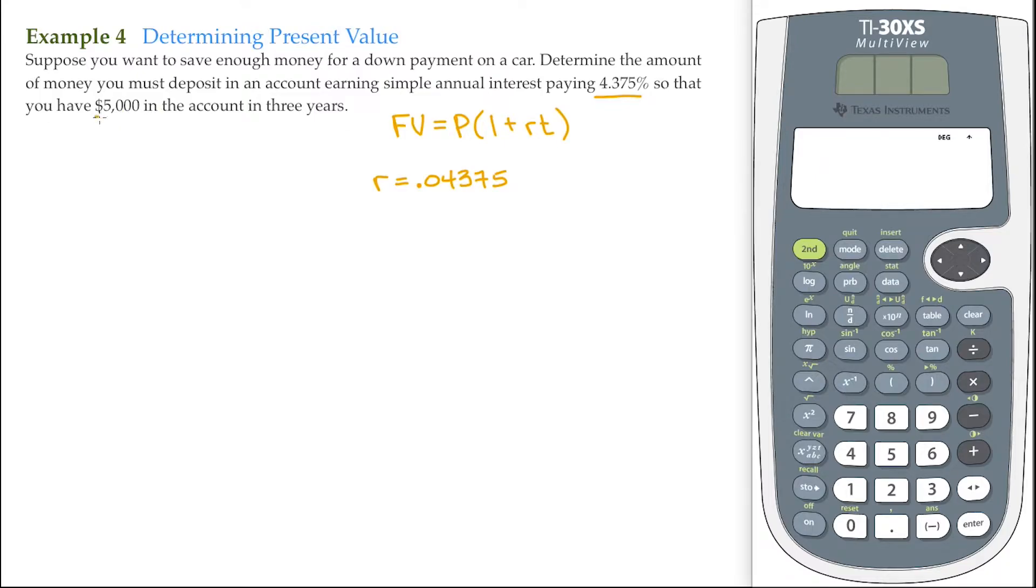That's in the future. I want to start out with a present value. I want to find out how long it's going to take to get $5,000. So our future value is $5,000. And I'm going to put it in an account for three years. So then my time, that's our three years.